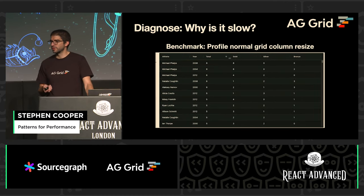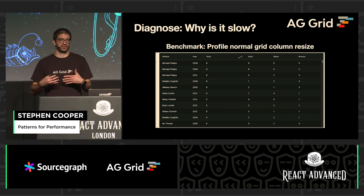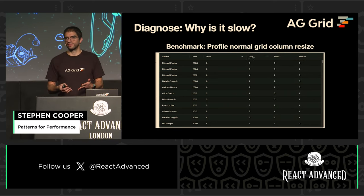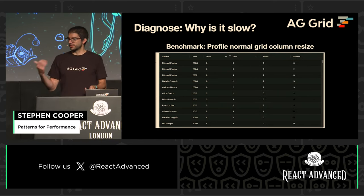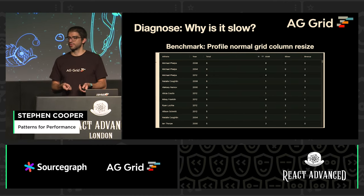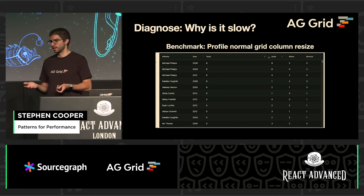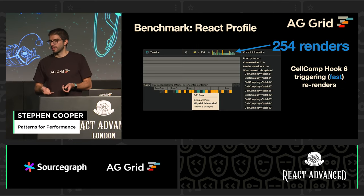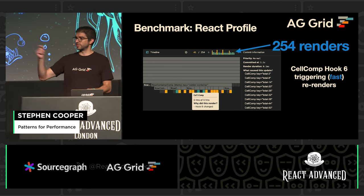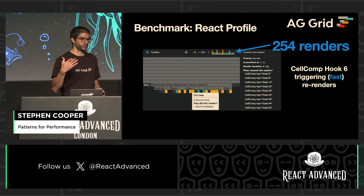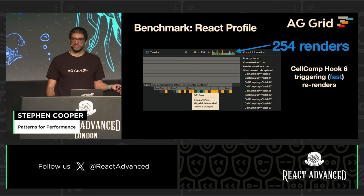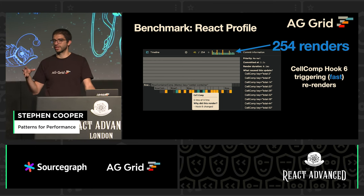If we want to diagnose why it's slow, we need to take a step back and think about the normal case when it works fast — how does the grid behave in that situation? So we take a benchmark: the standard grid with no cell renderers, and it resizes really smoothly. We're going to use the React DevTools profiler, and we get something like this. While we're resizing the column, we've got 254 renders going on — that is a lot of renders, but they're really fast renders, so that's why you're not seeing any slowdown.